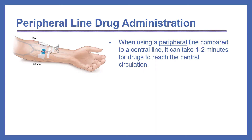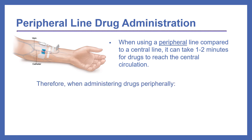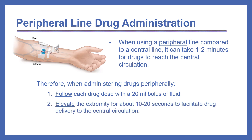When using a peripheral line compared to a central line, it can take 1 to 2 minutes for drugs to reach the central circulation. Therefore, when we administer drugs peripherally, we need to do two things: first, follow each drug dose with a 20 mL bolus of fluid — usually normal saline — and then elevate the extremity for about 10 to 20 seconds to facilitate drug delivery to the central circulation.